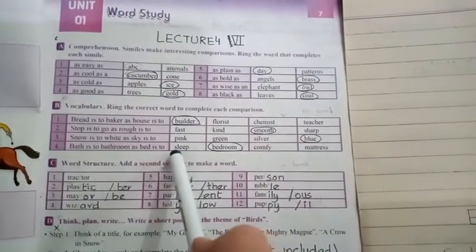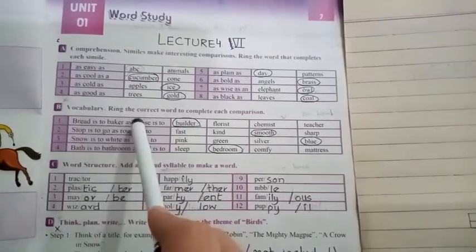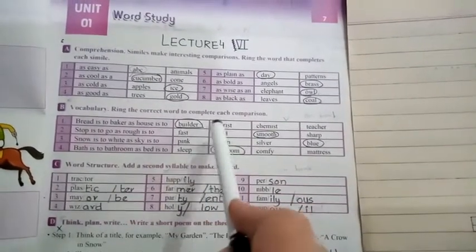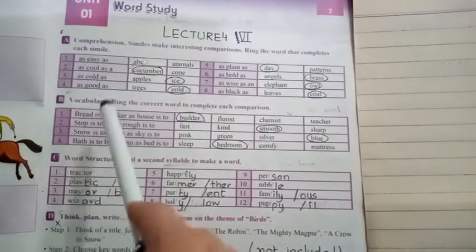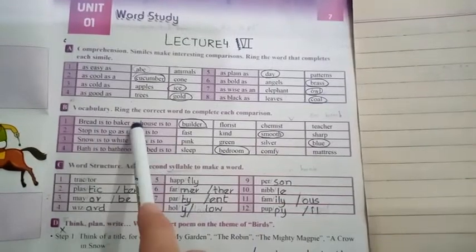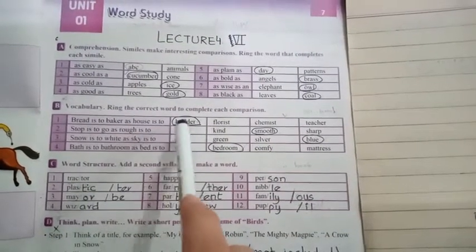Now let's move towards exercise B. Vocabulary: ring the correct word to complete each comparison. This is also done in the same way. Bread is to baker as house is to. Now who makes the bread for you? Baker.